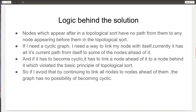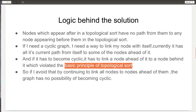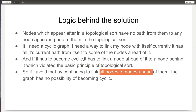So if I have to make my graph cyclic, what I have to do is link this node — to which my current node is connected — back to a node which is behind the current node, or to the current node itself. This basically is a violation of topological sort, as that would create a path from a node ahead in the topological sort to a node which is behind. So if I have to avoid the possibility of my graph becoming cyclic, I have to stop violating the basic principle of topological sort and continue linking all nodes to nodes ahead of them in the topological sort, and we are set.